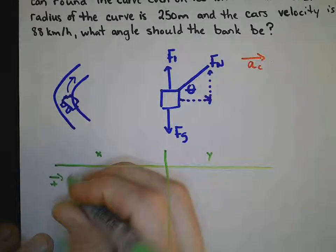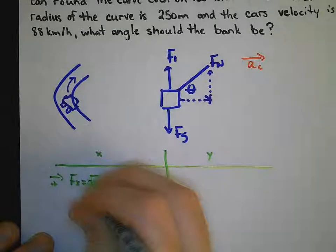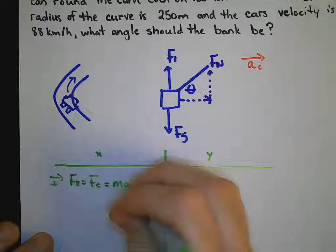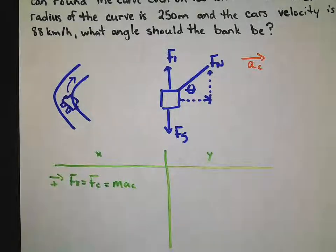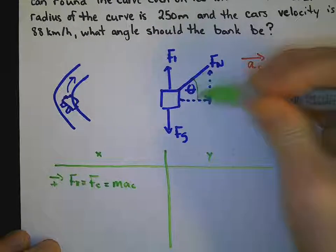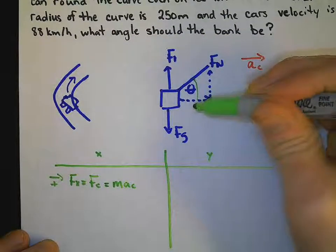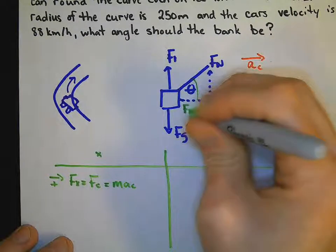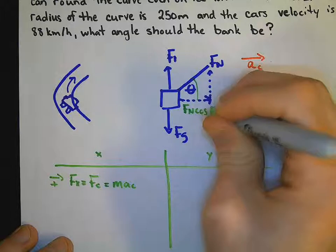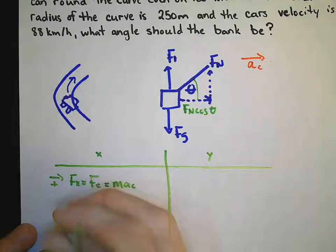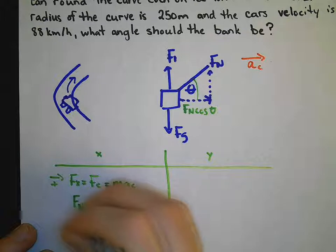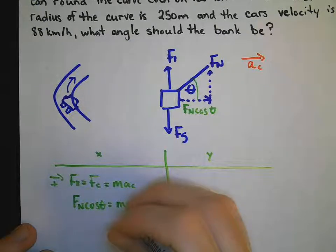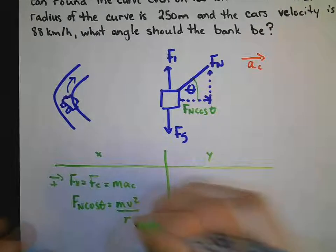We have that our net force is simply centripetal force, which is mass times my centripetal acceleration. Now let us see this right here. This is theta, opposite and adjacent. That's good to know. So we know that this is technically Fn cos theta. So my centripetal force in this case is represented with Fn cos theta will be equal to mv squared, and all of that will be divided by r.